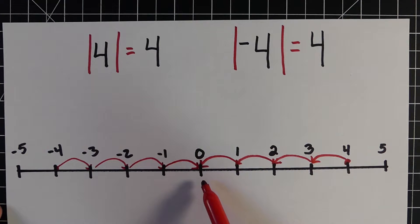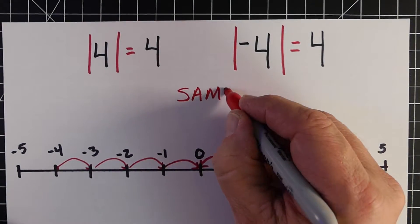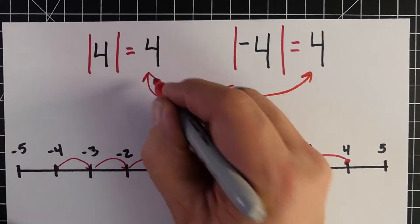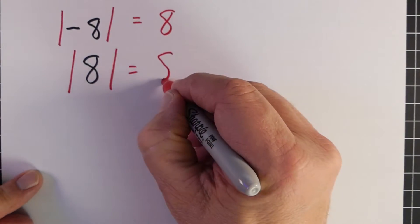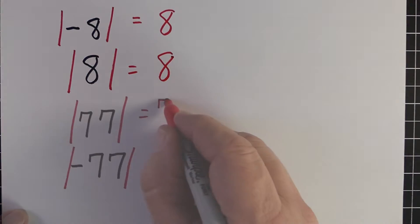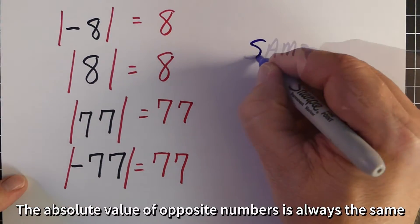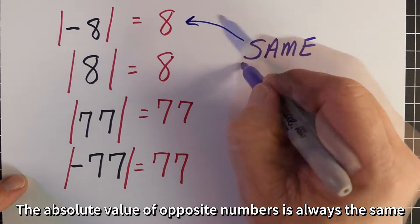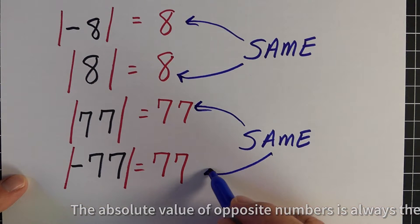Both of these numbers have the same absolute value. What you're going to notice is that numbers that are opposite of each other — for example, four and negative four — are going to have the same absolute value. Here are a couple other examples: negative eight and eight have the same absolute value, and 77 and negative 77 also have the same absolute value.